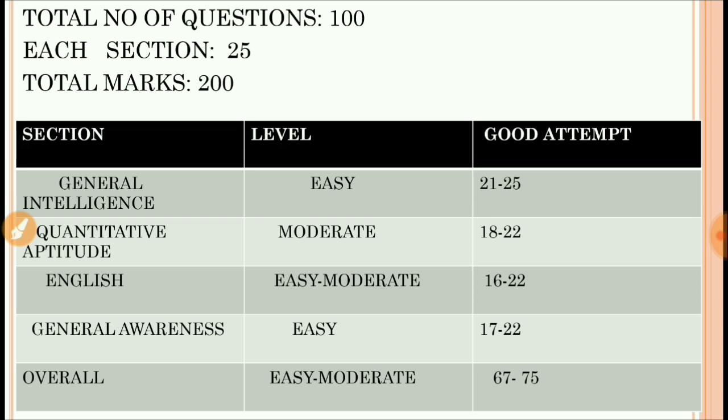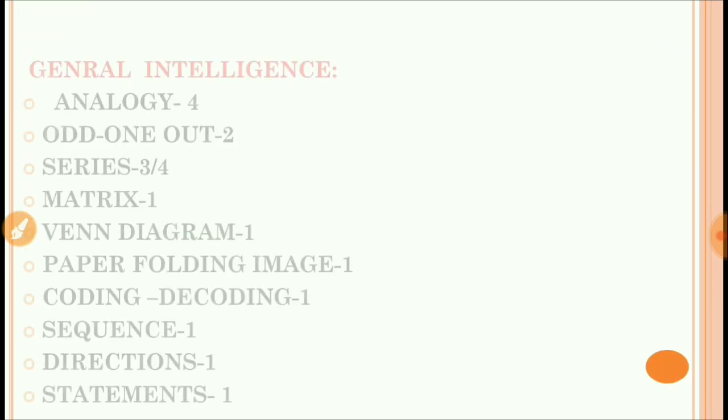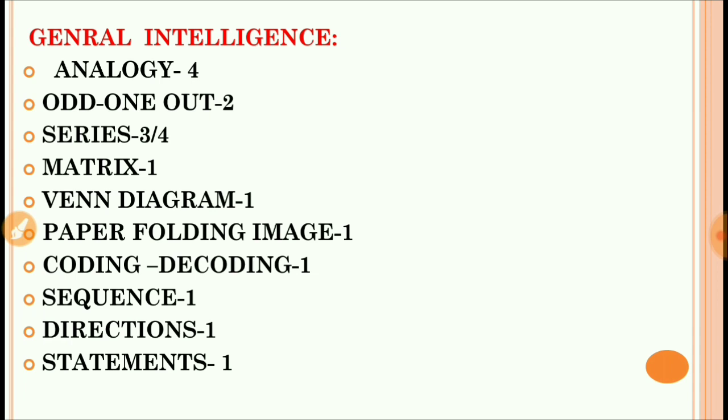Let's see from each section which topics had how many questions. In General Intelligence or reasoning section, analogy had four questions, odd one out had two questions. All these are easy questions. Series had three to four questions, matrix one question, Venn diagram one question, paper folding image one question, coding-decoding one question, sequence one question, directions one question, and statements and conclusions related one question. You should cover all these topics and practice them, so that on exam day you can attempt well.